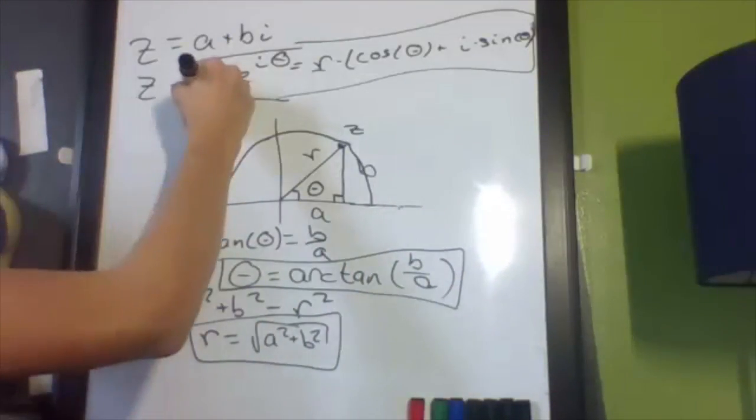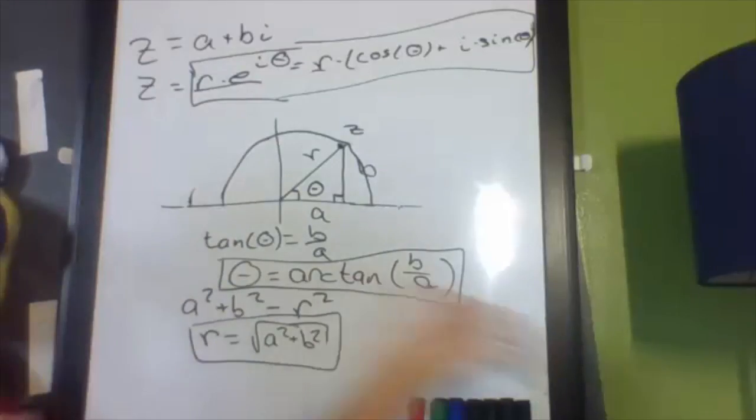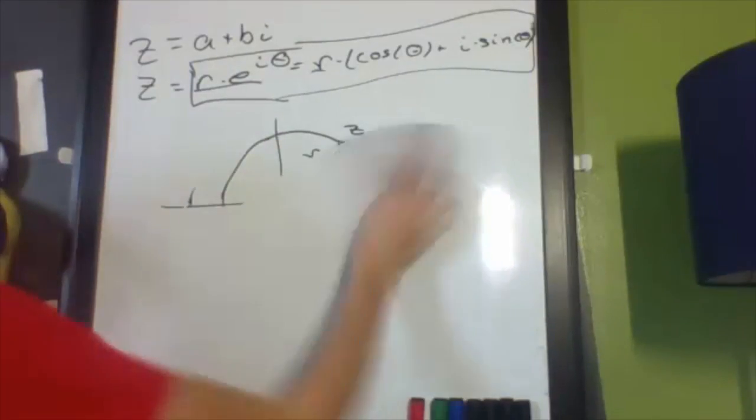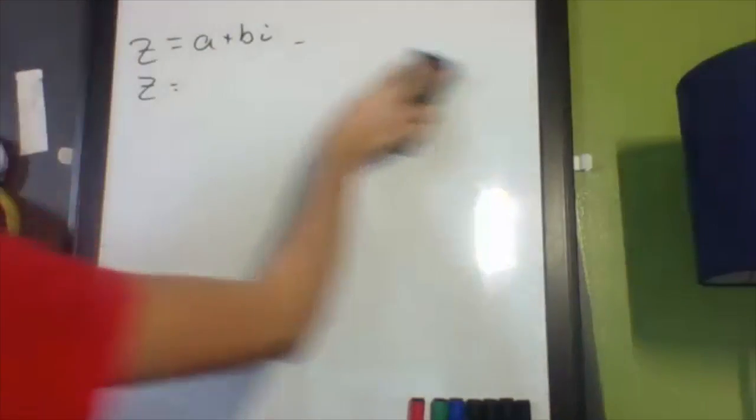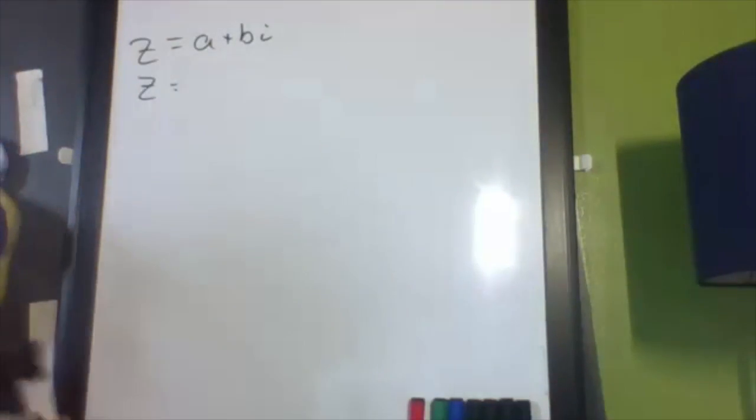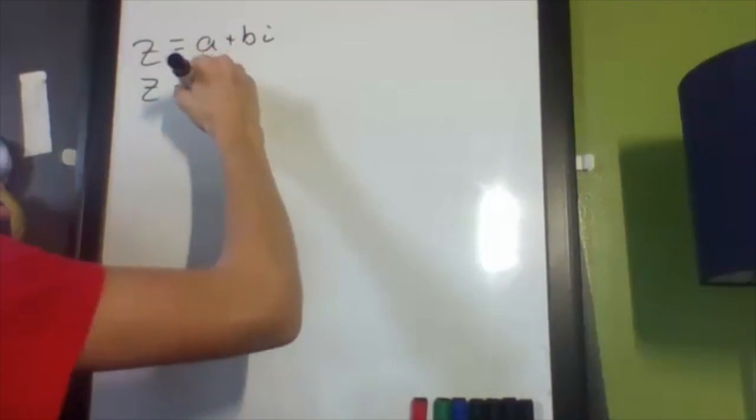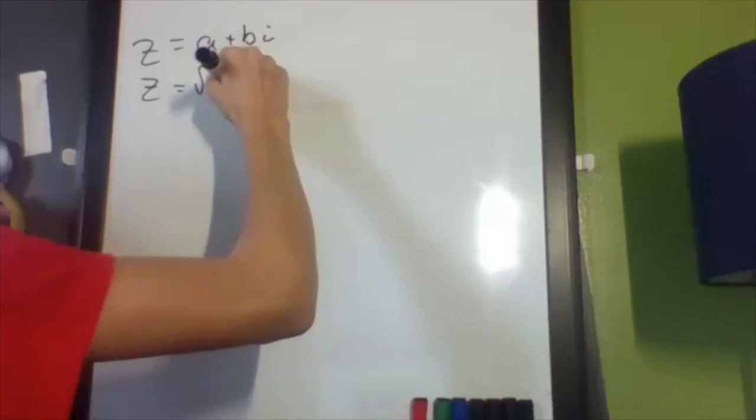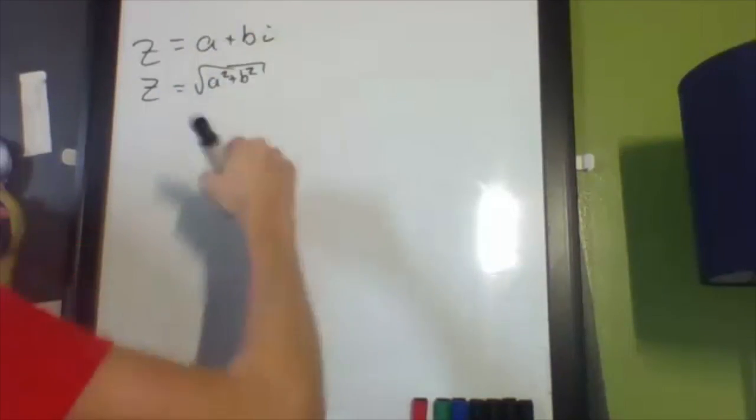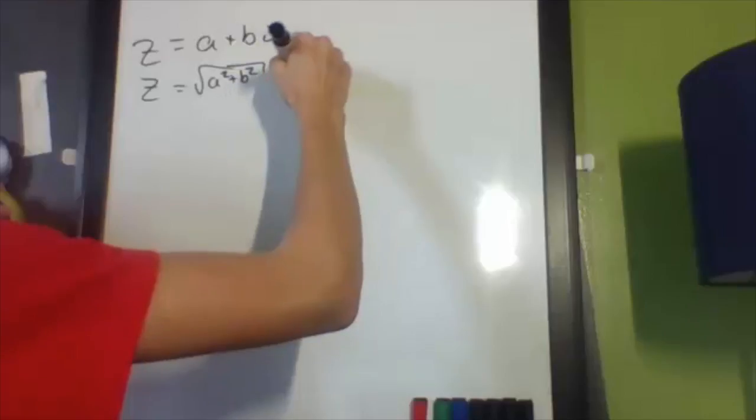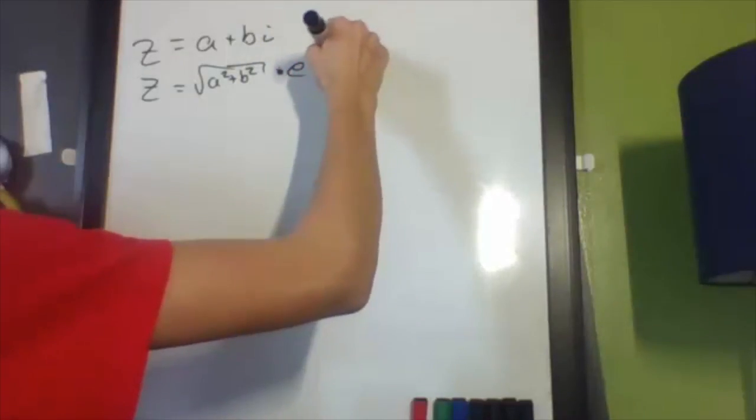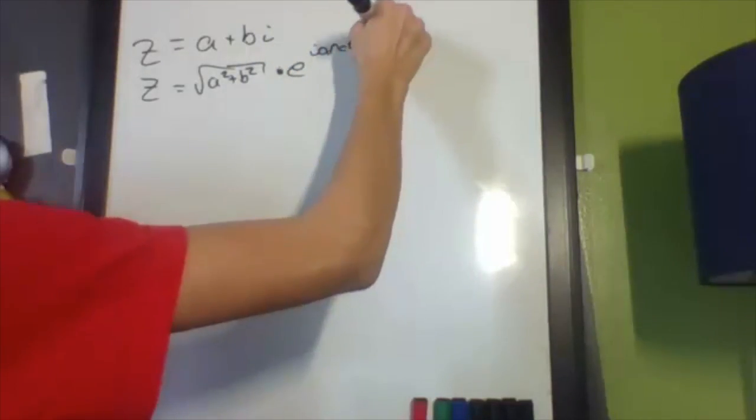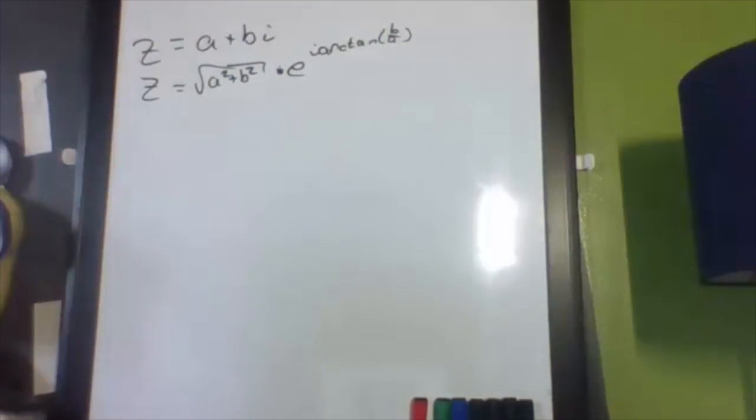And remember, we just plug it into that. Basically meaning, instead of representing it like that, we plug in for values of r and theta. And if you remember them, it was square root of a squared plus b squared for the distance, and arc tangent of b over a for the angle.